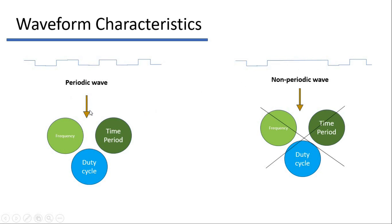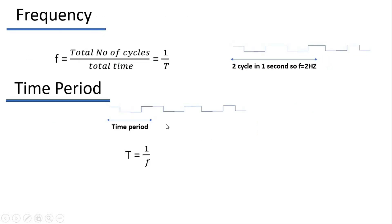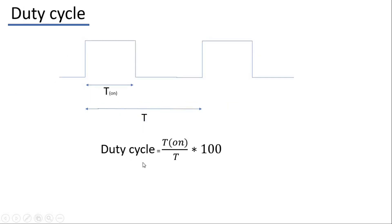In periodic waves we can define three things: frequency, time period, and duty cycle. The total number of cycles in one second is known as frequency. As you can see, there are two cycles in one second, so the frequency will be two hertz. The time required to complete one cycle is known as time period. The ratio of the positive pulse time T-on to the time period T is known as duty cycle, and it is expressed in percentage.